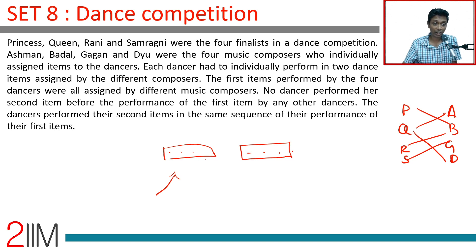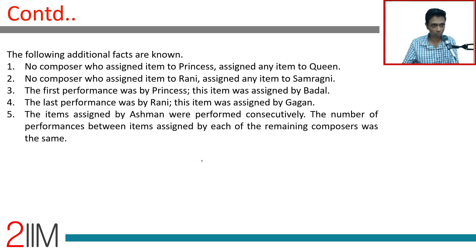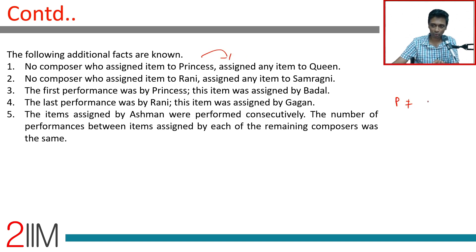Each dancer had to individually perform in two dance items assigned by different composers. No composer who assigned an item to Princess assigned any item to Queen — so P not equal to Q in terms of same composer. Similarly, no composer who assigned an item to Rani assigned any item to Samragni — R and S cannot share a composer.